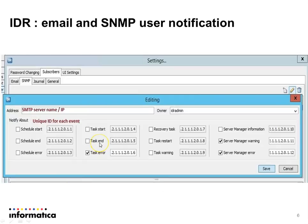Here we can see the SNMP Settings sub-tab. We need to provide the SMTP server IP or server name. Under Notify About, we need to select the events for which we want to send email notifications to the subscriber's email. We also need to provide a unique ID for each type of selected event. I will explain how to do that very soon.